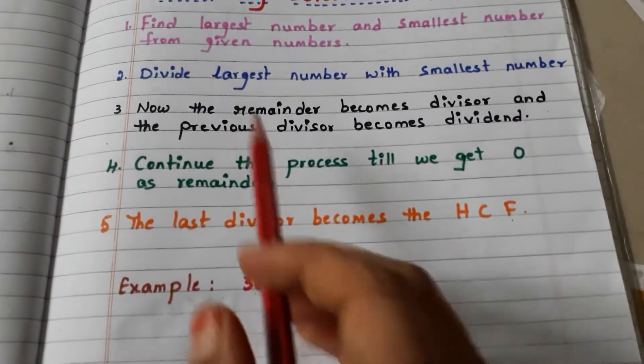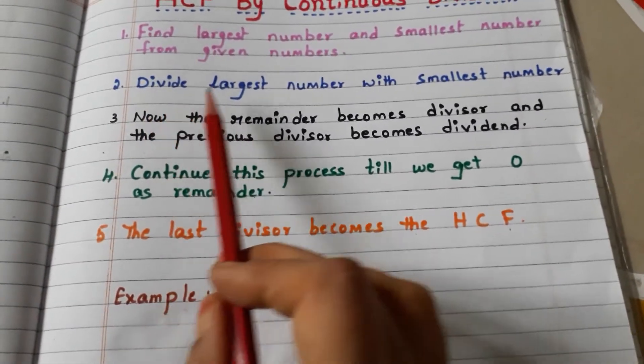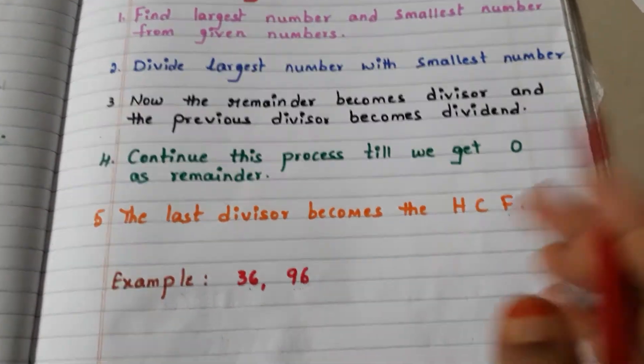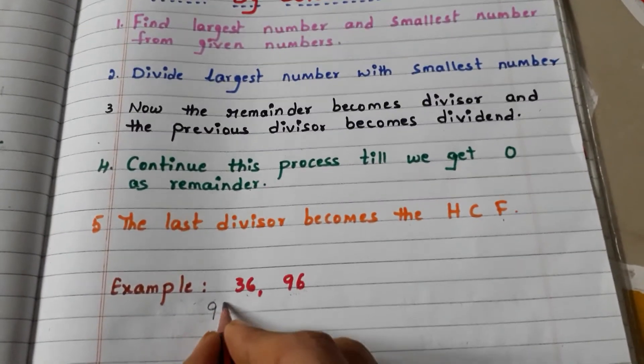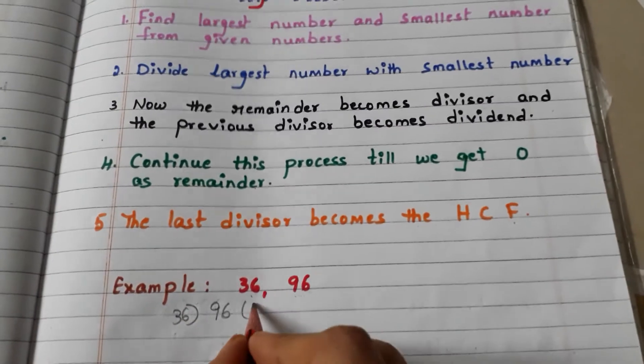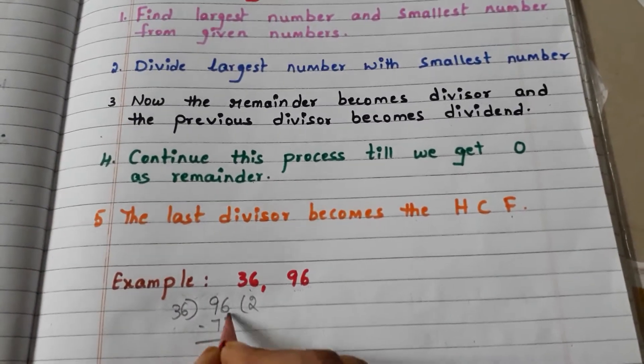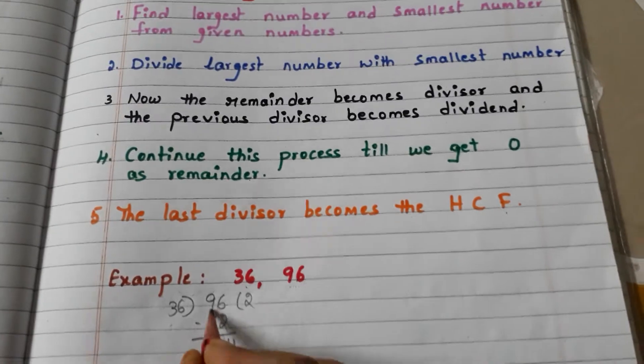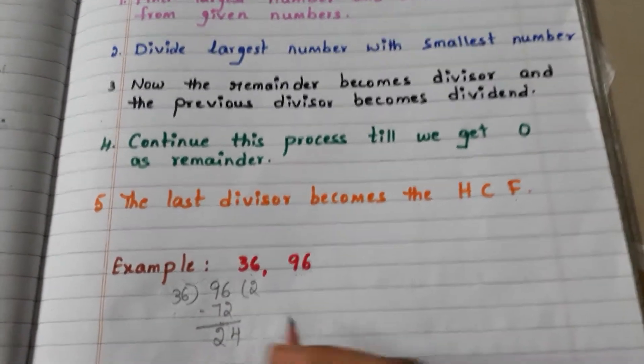Here we have to divide 96 with 36. Okay, 36 twos are 72, 6 minus 2 is 4, and 9 minus 7 is 2. Here we have the remainder 24.